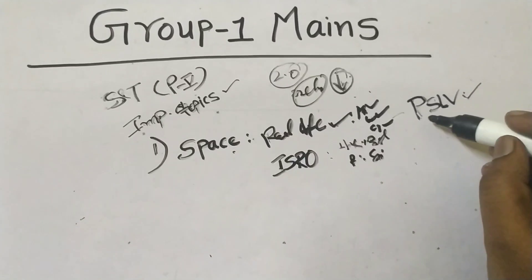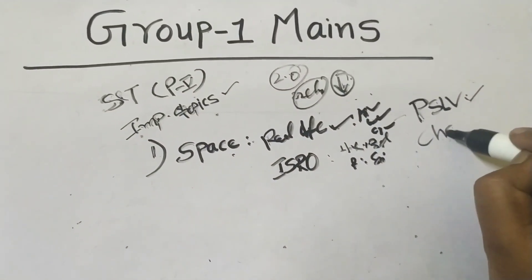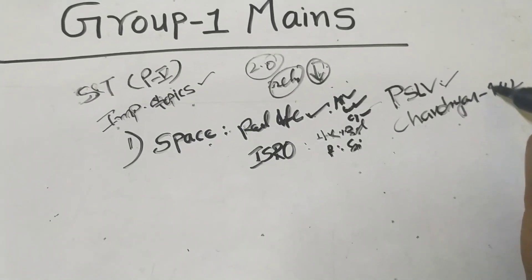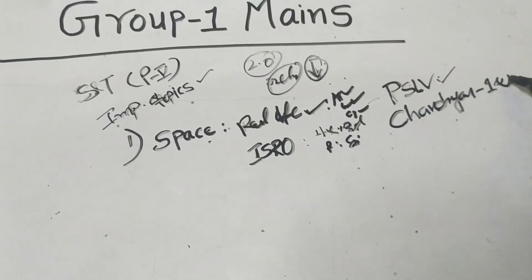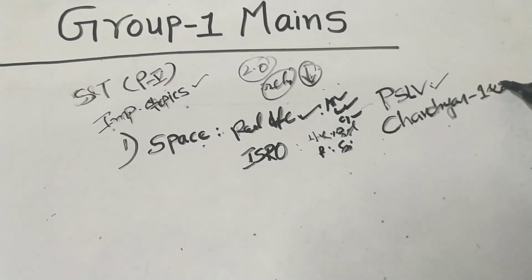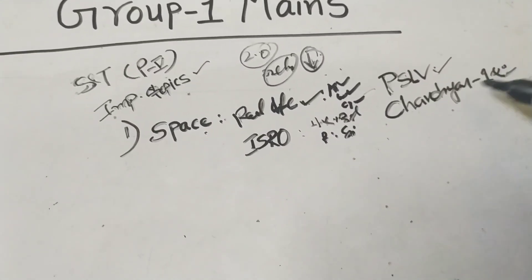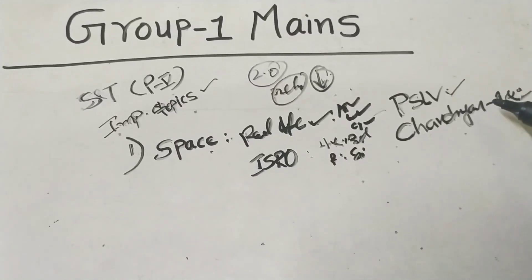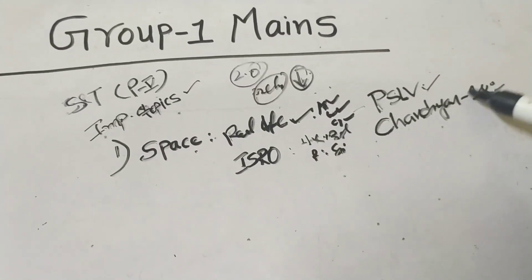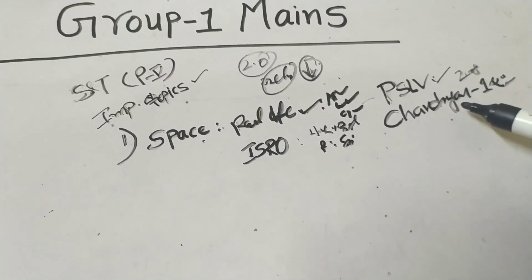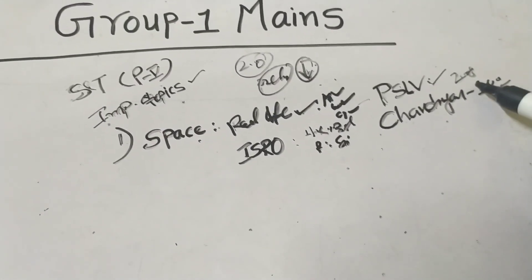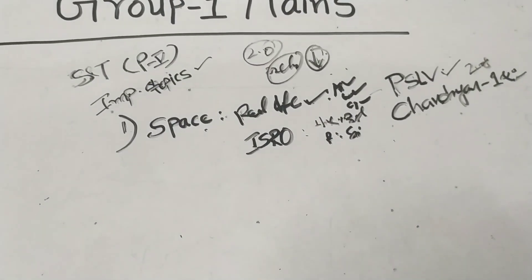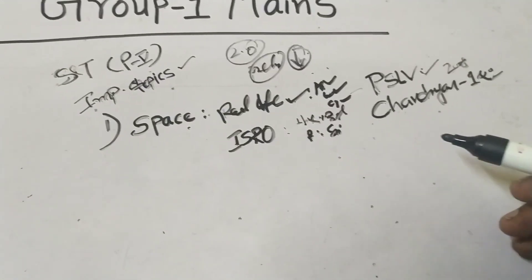PSLV is used for Chandrayaan. Chandrayaan 1 was successful, and Chandrayaan 2 had a partial failure — the lander did not land successfully. So Chandrayaan 1 and 2 are both important missions.